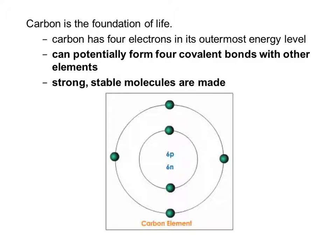Carbon has four electrons in its outermost energy level, and those are the electrons that interact and form bonds. Since it has those four electrons, it can potentially form four covalent bonds with other elements. Covalent bonds are extremely strong and they don't disassociate in water. Because of this, we get strong, stable molecules, which are exactly the type of molecules we want in our bodies and in other living things.